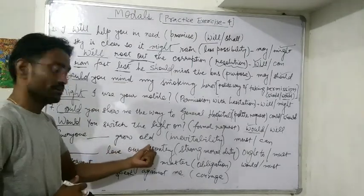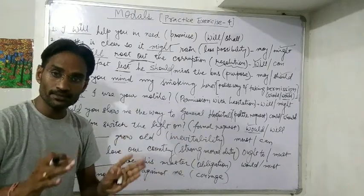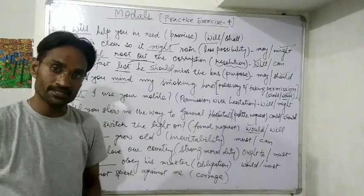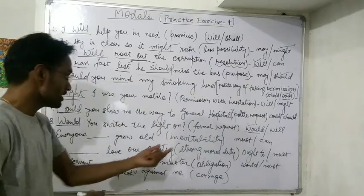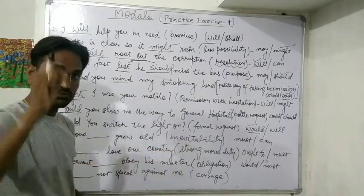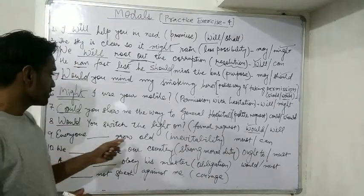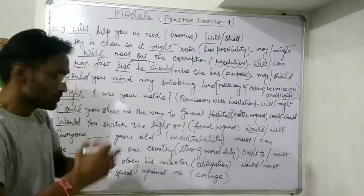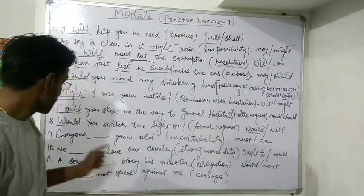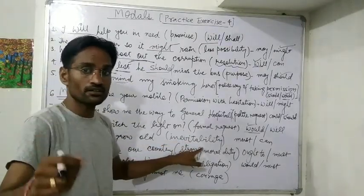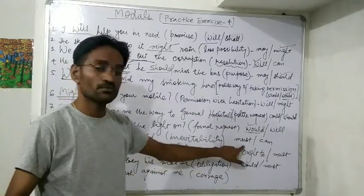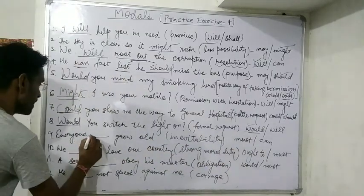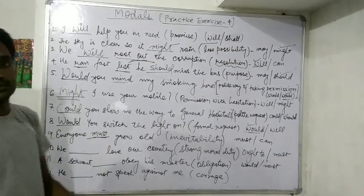Next: 'Everyone grow old' — inevitability. Inevitability means something that is bound to happen; you cannot stop it. Everyone grows old — it is natural; we grow old and then we perish. For something inevitable that has to take place at any cost, we use 'must.' Answer: 'Everyone must grow old.'